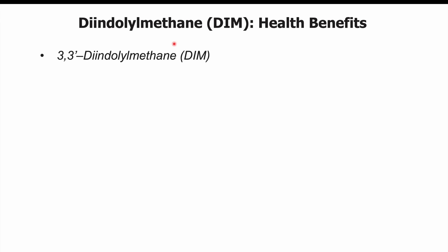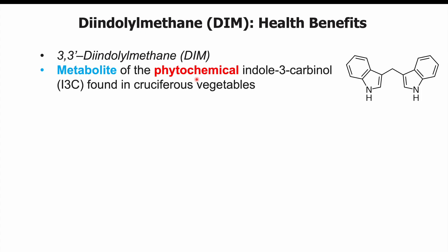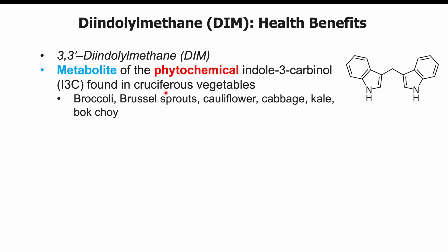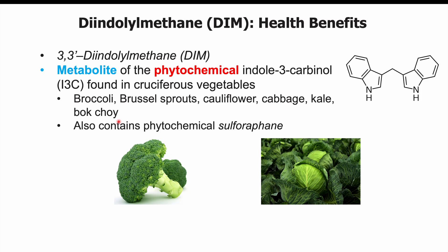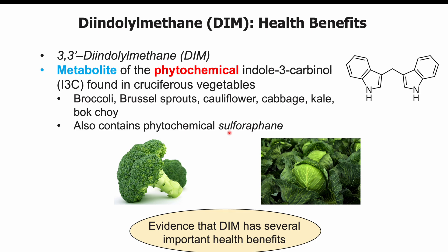This particular plant metabolite is more specifically referred to as 3,3'-diindolylmethane. It is a metabolite of the phytochemical indole-3-carbinol, or I3C, which is found in cruciferous vegetables. A phytochemical is a chemical found in plants, and indole-3-carbinol is found in cruciferous vegetables like broccoli, Brussels sprouts, cauliflower, cabbage, kale, and bok choy. These vegetables also contain other phytochemicals including sulforaphane. There is evidence that DIM has several important health benefits, which we'll cover in this lesson.